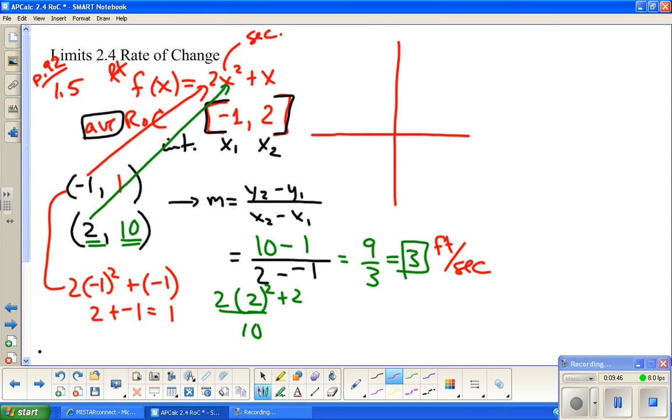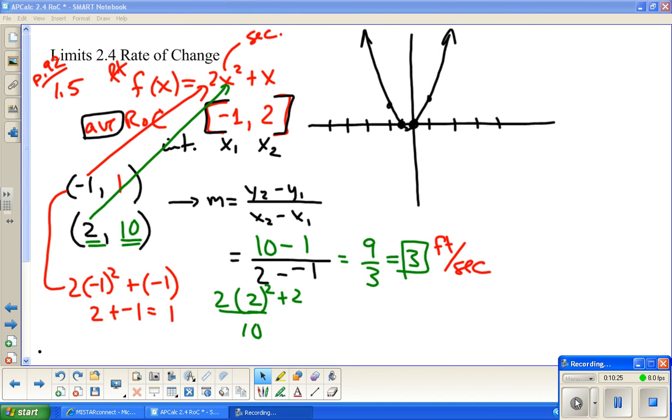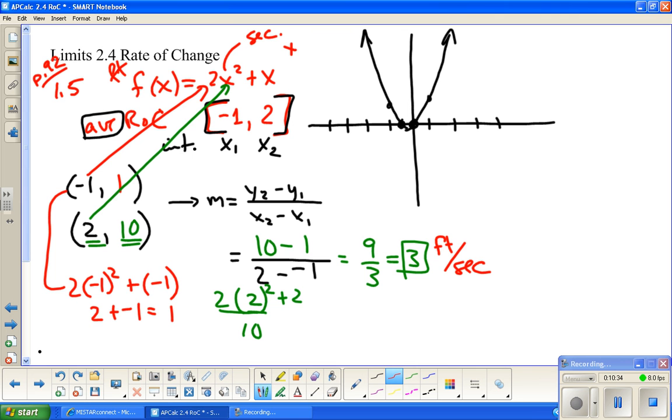If I had units, then I would be using those units. If this was in feet and x was in seconds, then this would be feet per second. A little quick graphical connection here. I have a zero at zero, and I have a zero at, looks like negative one-half. So, my parabola ought to look something like this. The vertex should be in the middle. And, if I look at negative one, one.